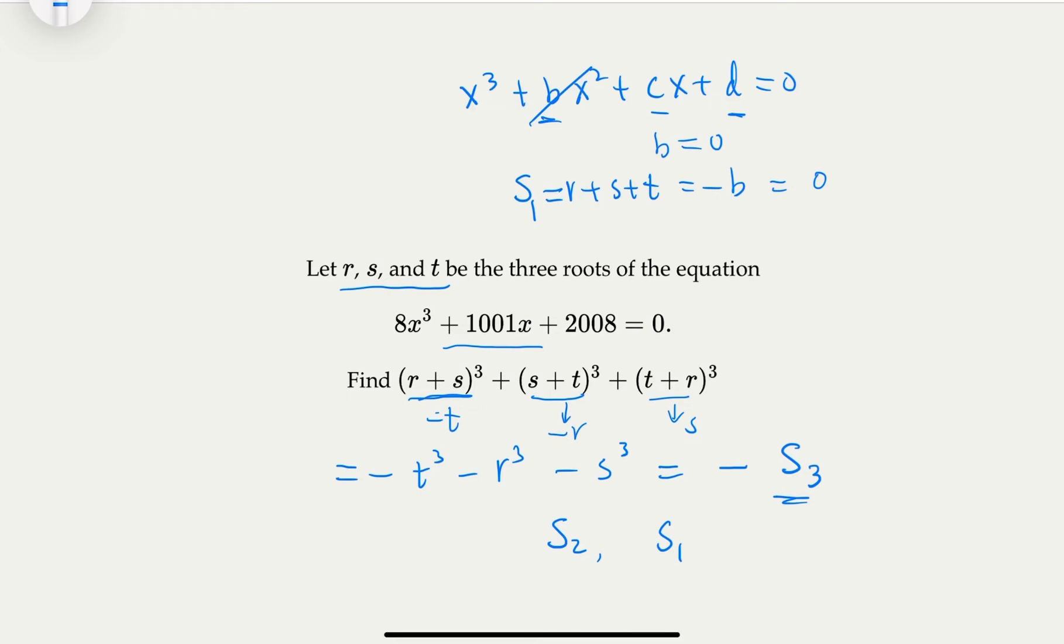Yeah, you could. But here, just like what we did in explaining the relationship of higher degree sums, r, s, t are the roots to this equation here. So the meaning of that is that if you replace X to r, s, t, the equation holds. Let's write it out. So 8r³ plus 1001r plus 2008 equal to zero.